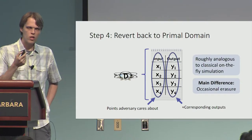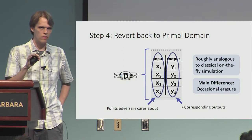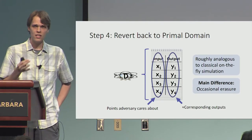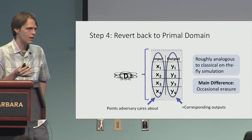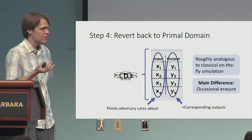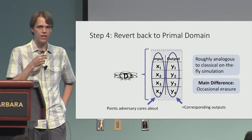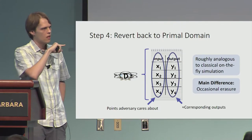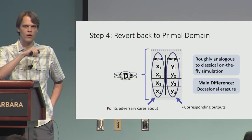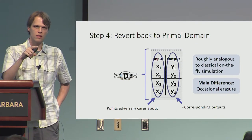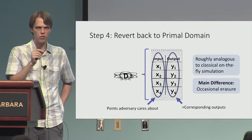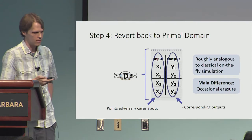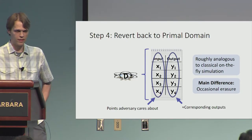Remarkably, if you work out the details of the update procedure for these databases, it's actually very similar to the classical on-the-fly simulation. The main difference is that occasionally we actually have to erase. The reason is that in the Fourier domain, if you query on the same point function twice, the effects will cancel and you'll actually remove a point from your database. This also happens after we revert back to the primal domain, whereas classically you never forget anything.